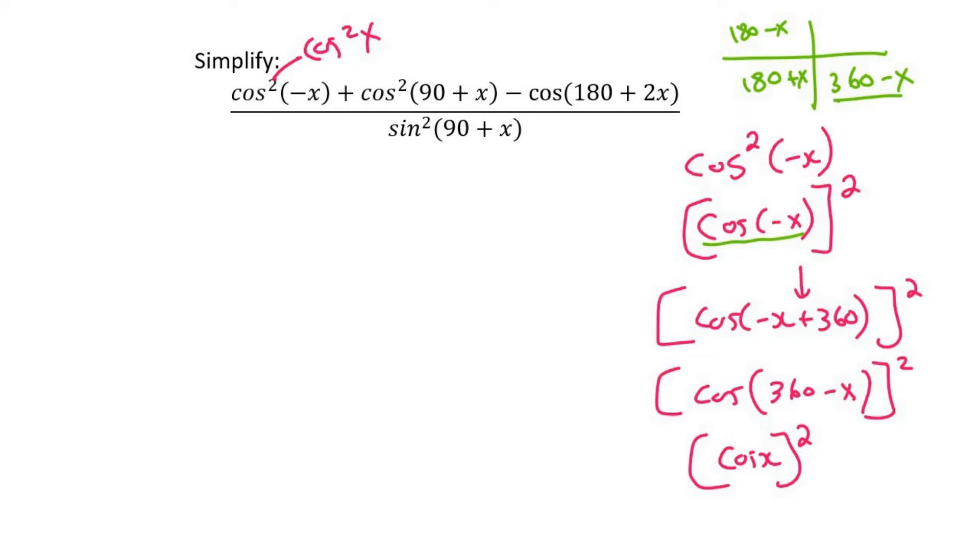The next one is cos squared of 90 plus x. So I would put the 2 on the outside like that. And then I need to realize that this is a co-function. Now a co-function of cos 90 plus x, that's the weird one that always gives us negative sin x. You need to just memorize that.